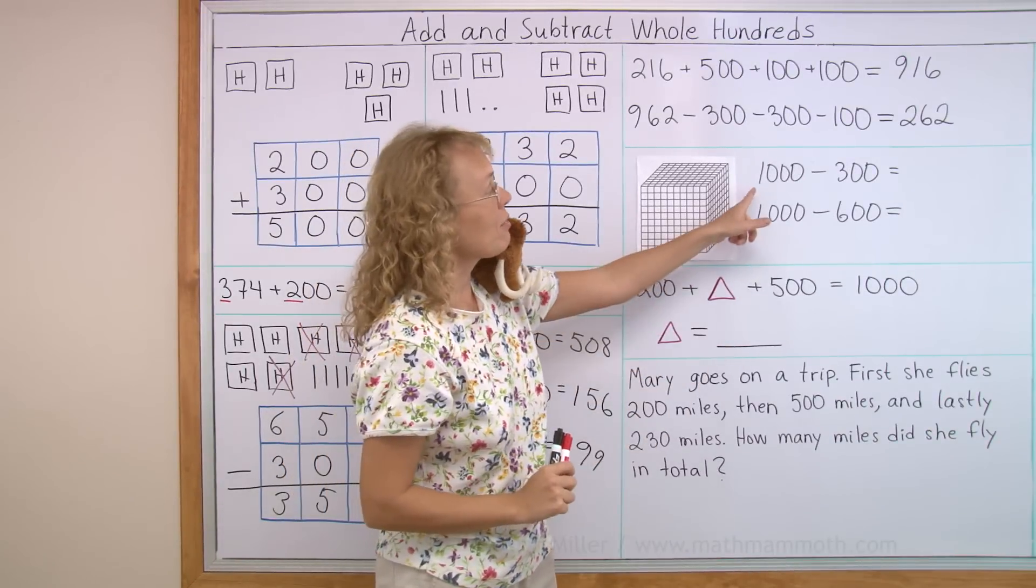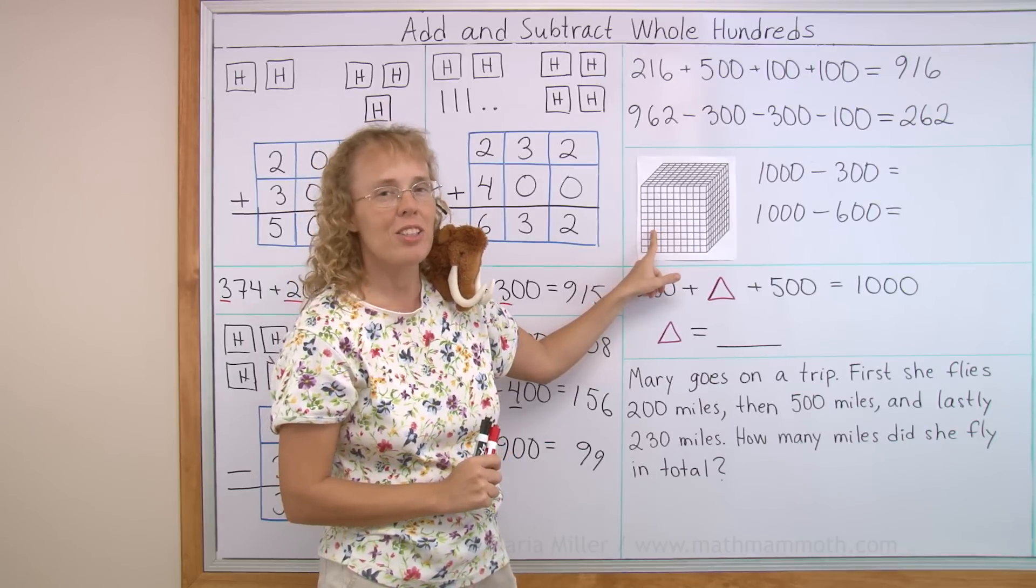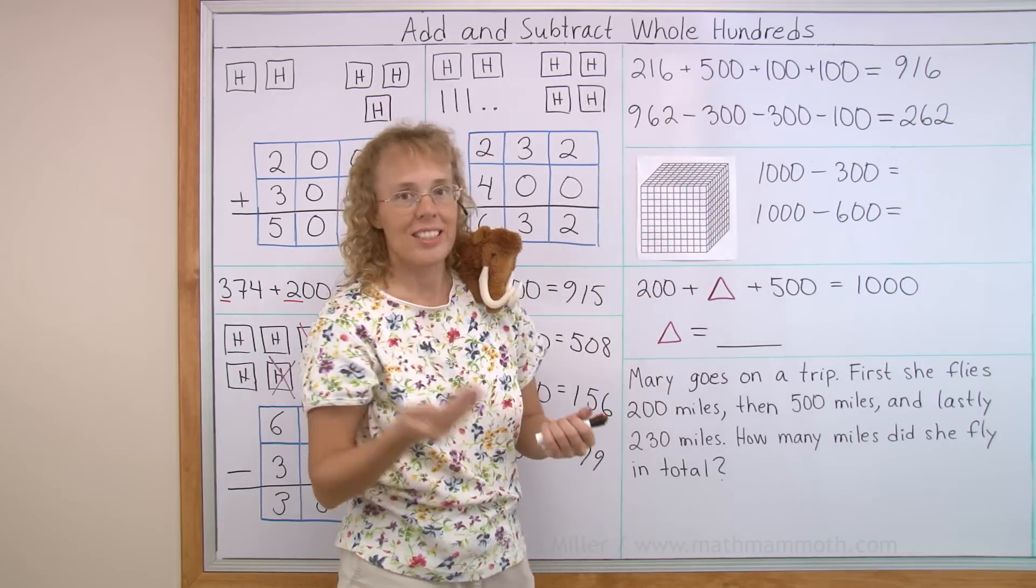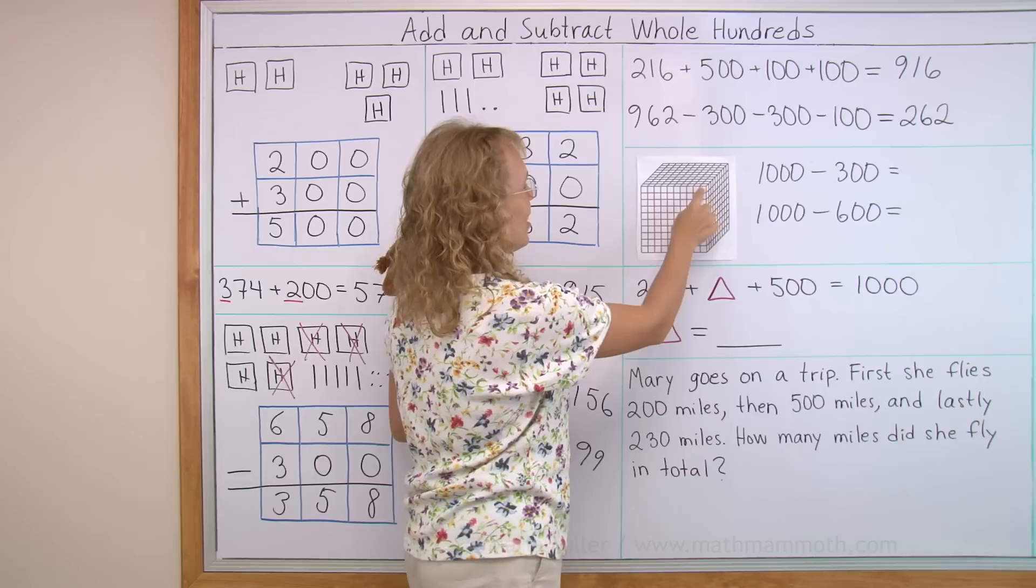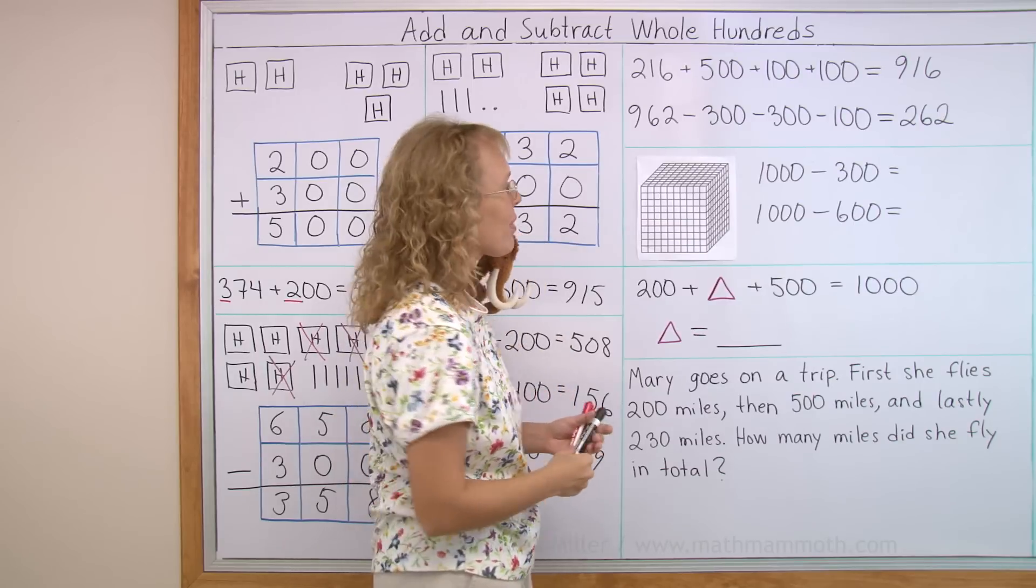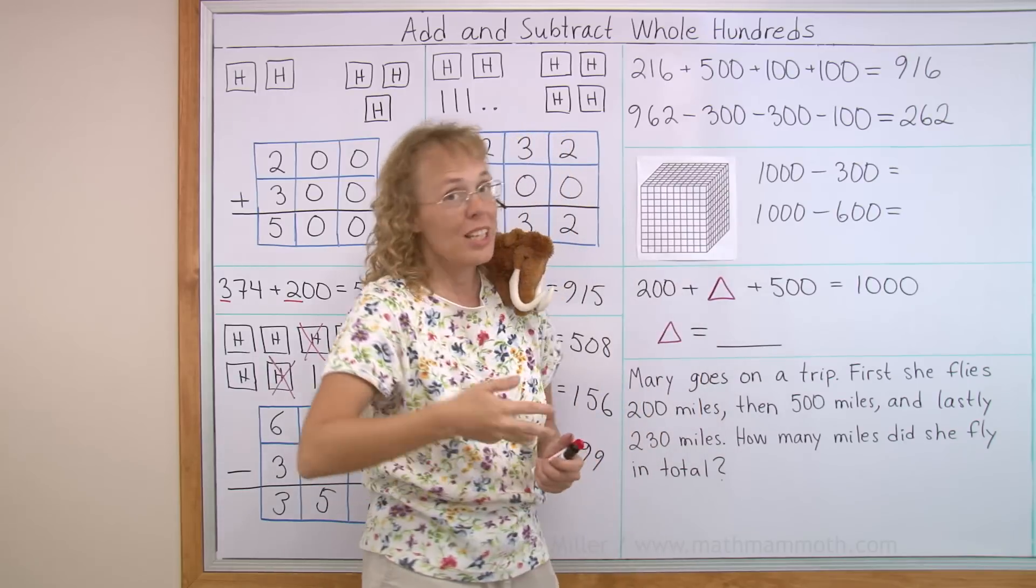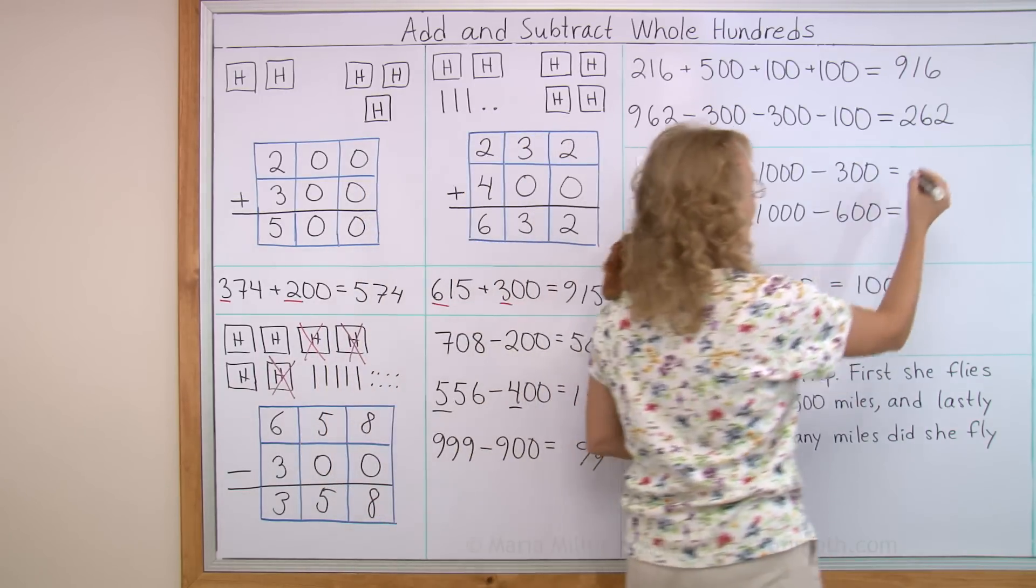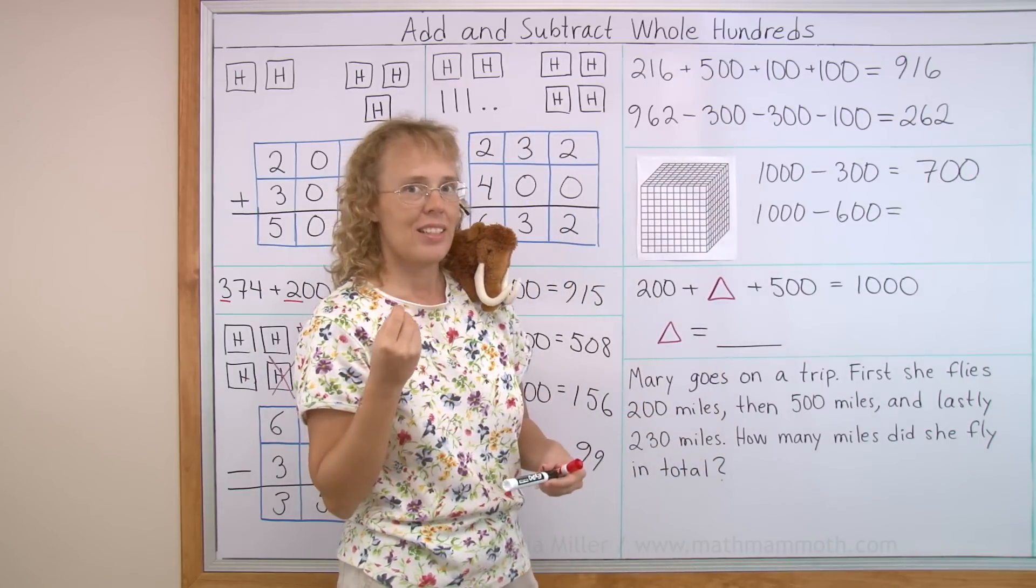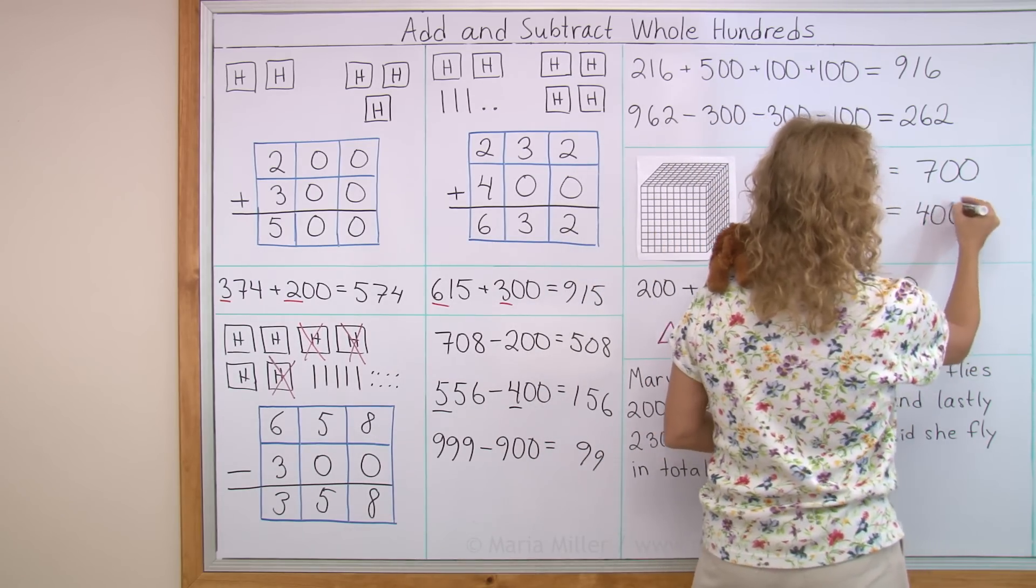Next, we're going to subtract from 1000. So I put here a picture of 1000 to remind you of something very important. And that is that 1000 is actually 10 hundred flats. Here's 100. This is 100. And there's 10 of them stacked end to end behind each other. So think of this as 10 hundred minus 300. 10 minus 3, 7. So 700 are left. Can you do this one? 10 hundred minus 600. 400 are left.